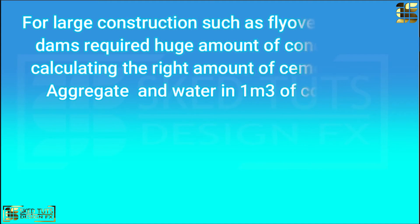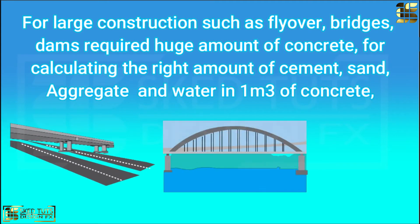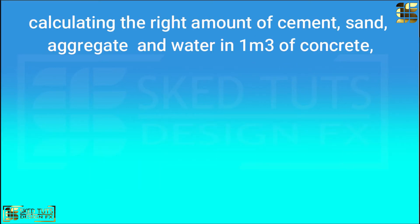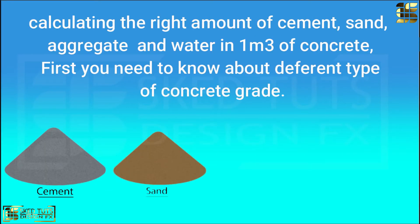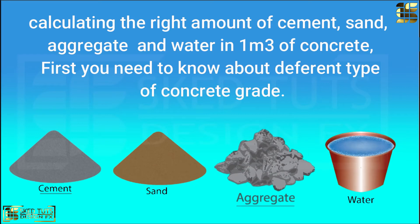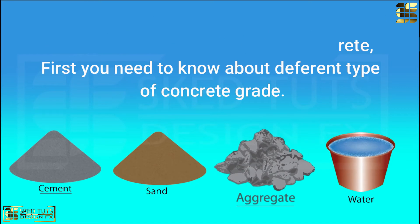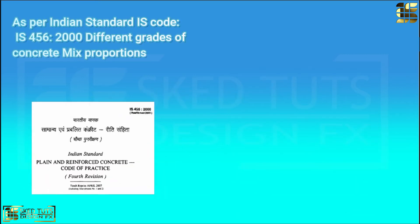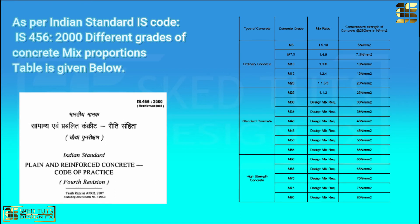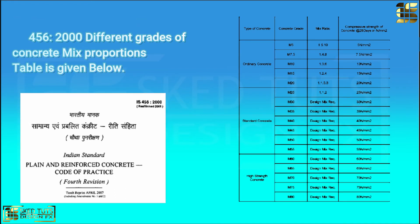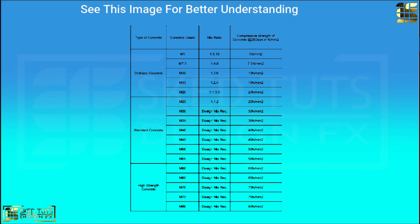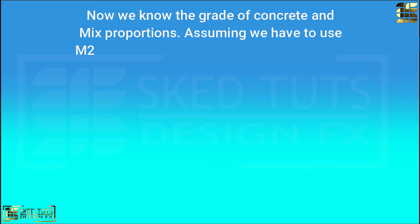For large construction such as a flyover, bridge, dam, required huge amount of concrete. For calculating the right amount of cements and aggregate and water in one cubic meter, first we need to know about different type of concrete grade. As per Indian standard IS 456-1000, different grade of mix proportion table is given. Now, see the image for mix proportion of concrete. Now, we know the grade of concrete and mix proportion.